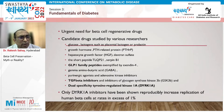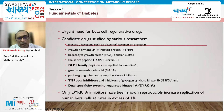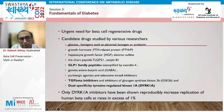The most promising results are probably with DYRK1A inhibitors — dual specificity tyrosine-regulated kinase 1A, which I'll call DYRK1A. DYRK1A inhibitors have been shown to reproducibly increase the replication of human beta cells at rates in excess of 1%, showing the maximum promise among all the molecules studied.